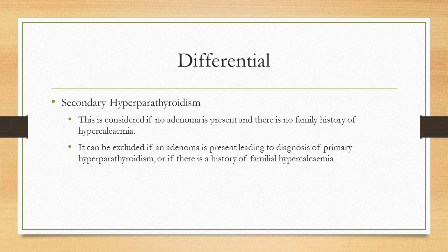The third differential is secondary hyperparathyroidism, considered if no adenoma is present and there is no family history of hypercalcemia. There are several different causes of secondary hyperparathyroidism, including celiac disease, vitamin D deficiencies, chronic kidney disease, and many others. This can be excluded if there is no adenoma present leading to a diagnosis of primary hyperparathyroidism, or if there is a history of familial hypercalcemia.